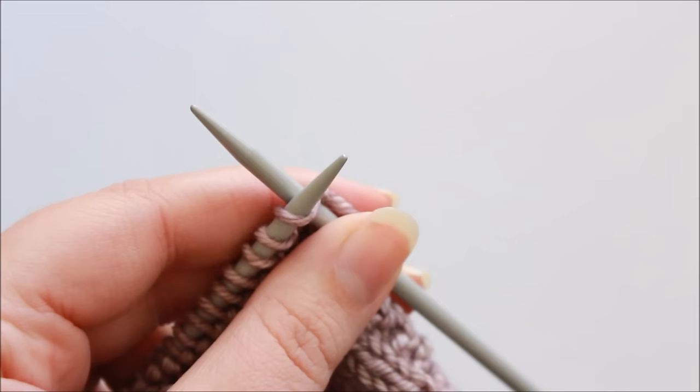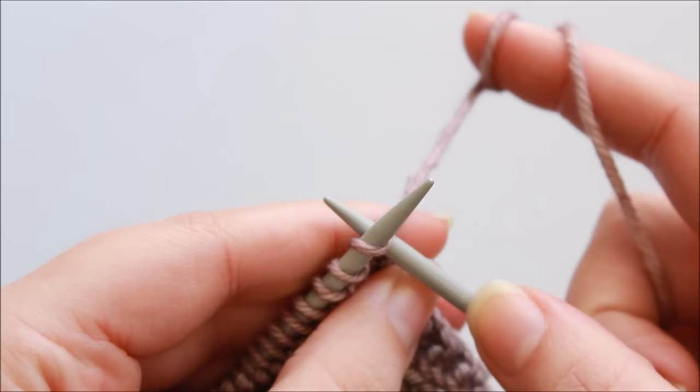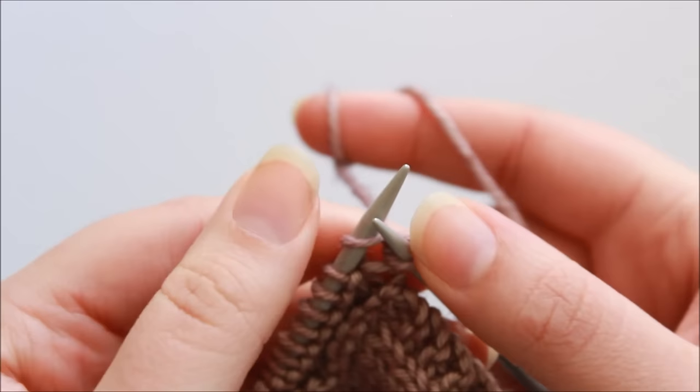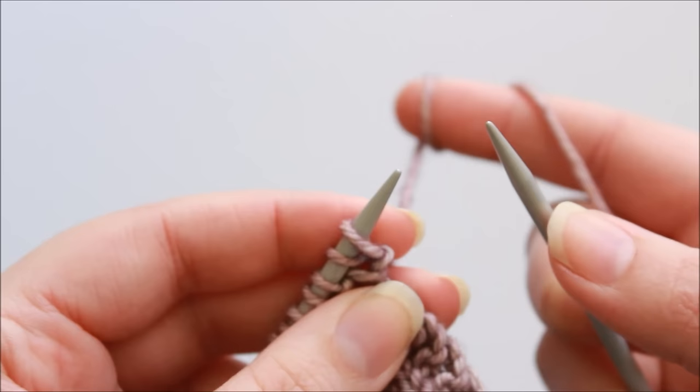The first thing I need to do is cast on two stitches, and to do this using the knitted cast on method I simply knit into my first stitch but don't slip the work stitch from the left hand needle. Take this new loop that's on the right hand needle and place it on the left hand needle like so, and that's created a new stitch.